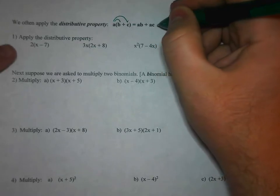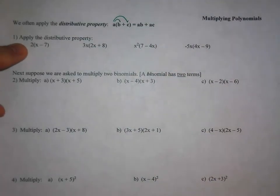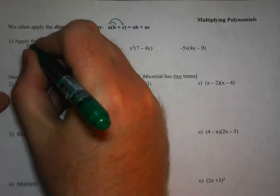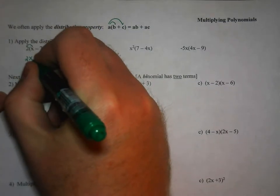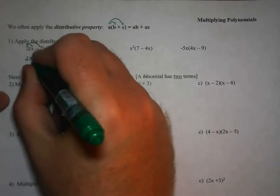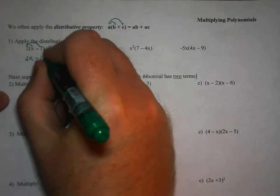So an example of that in number one, if we have 2 times the quantity x minus 7, you distribute the 2 to the x, which is 2x, and then distribute the 2 to the minus 7, which will give you minus 14.